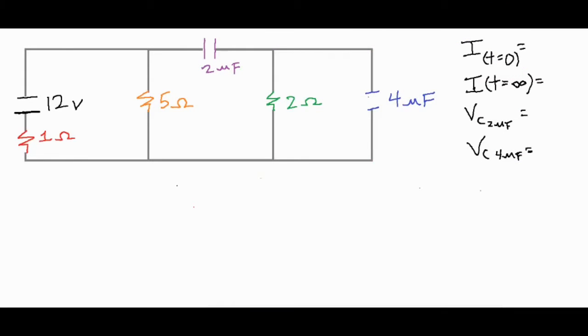In this video we're going to be checking out an RC circuit to where we find the current immediately after the switch is closed, the current after a long time has passed, and the voltage across both of the capacitors.